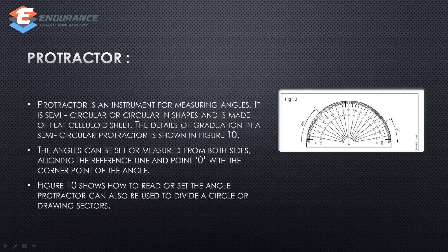The next one is the protractor. If we use a protractor, it is a normal instrument to measure angles. We are available in circular and semi-circular shapes. We can make it in a celluloid sheet material. Normally this is a semi-circular protractor. If we measure angles, we can read from two sides, starting from 0. If you divide a circle, you can use a triangle.